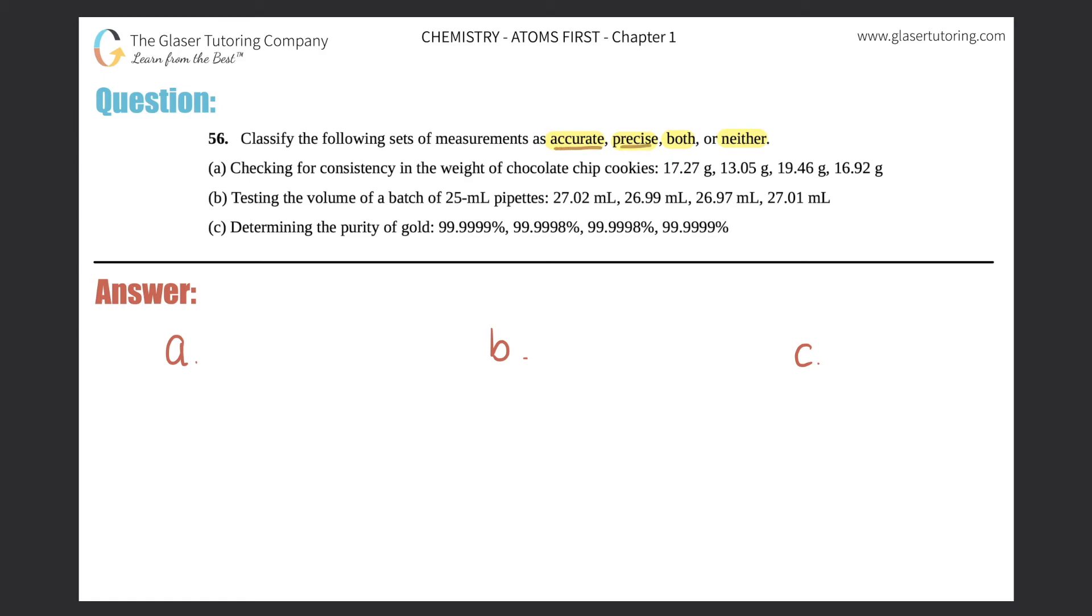If you're accurate, you are close to an intended target or intended goal. For example, in the last question that we did, number 55, if you didn't go back and check it, it's a cool accuracy and precision question. In that question it was trying to hit the bullseye.